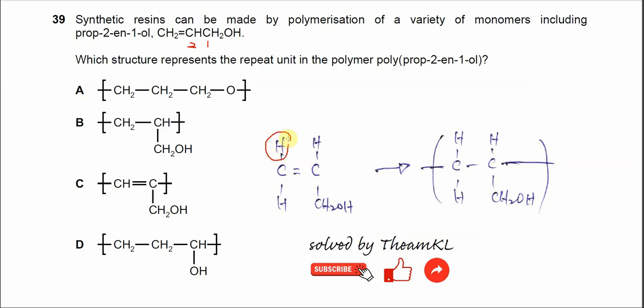So there's H, two hydrogens here, one H with the carbon, and another one is CH2OH. This is the monomer.